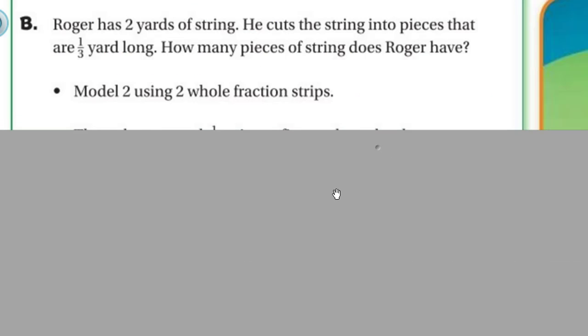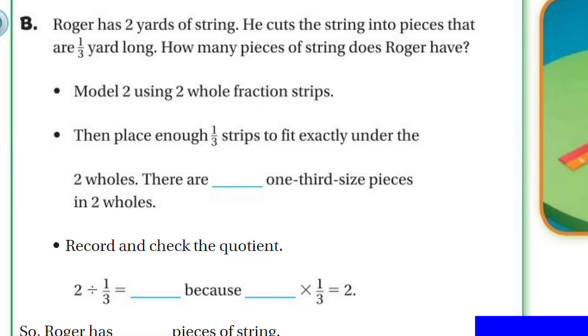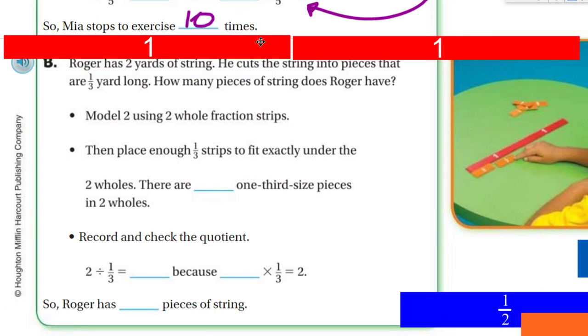Now it says Roger has 2 yards of string. He cuts the string into pieces that are 1-third yard long. How many pieces of string does Roger have? Model 2, that 2 yards of string, using 2 whole fraction strips. I think we have some down here. So let's go ahead and do that. So here's my 2 yards of string, side by side. And then place 1-third strips to fit exactly under.